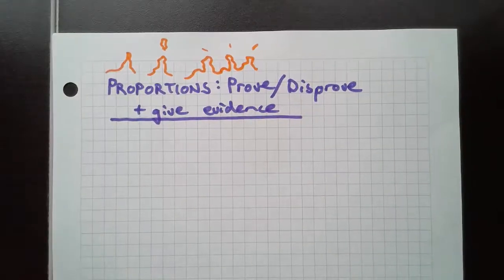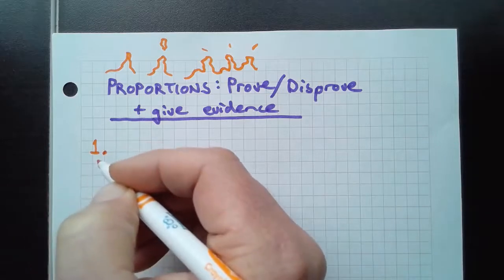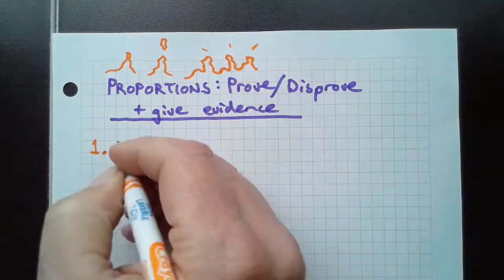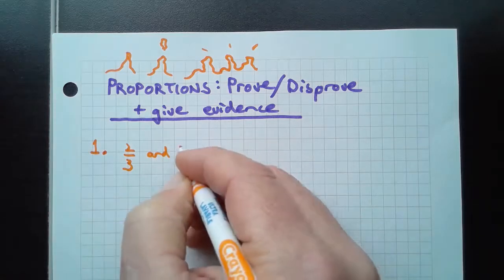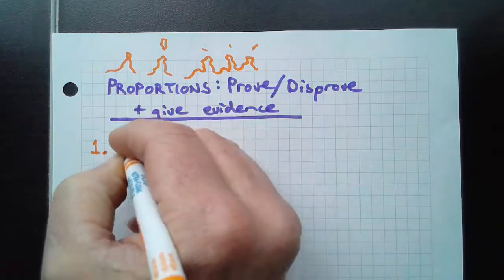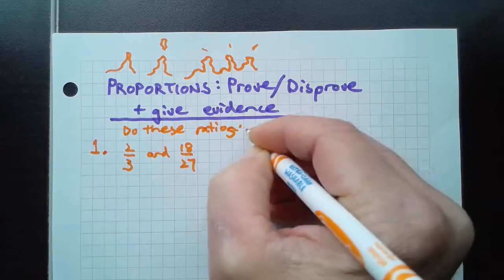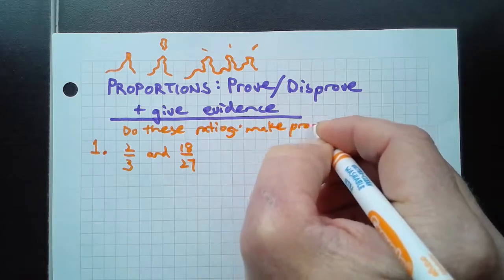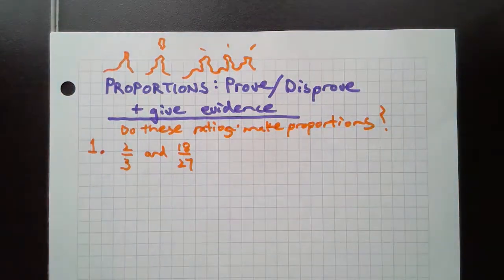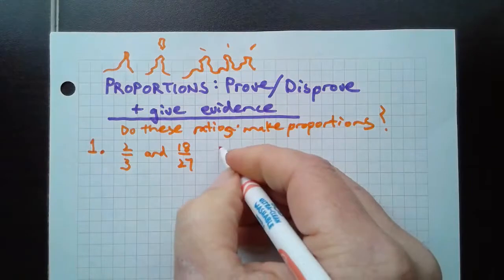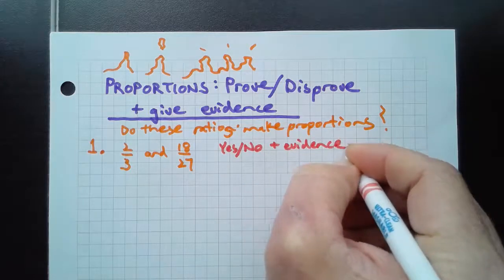Let's call this number one because that's what it is in the book. I've got these two fractions and the book says do these ratios make proportions? We're looking for yes or no plus evidence. We want to prove it, we don't want to guess.